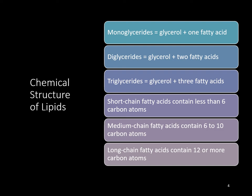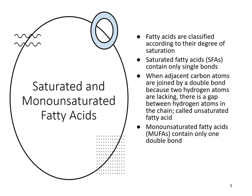Fatty acids are classified by their degree of saturation. Saturated fatty acids (SFAs) contain only single bonds, with two hydrogens attached to every carbon. When adjacent carbon atoms are joined by a double bond, that's called an unsaturated fatty acid. Monounsaturated fatty acids (MUFAs) have only one double bond, while polyunsaturated fatty acids (PUFAs) have more than one double bond.